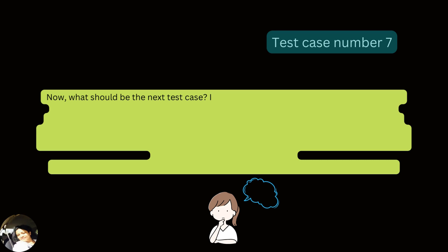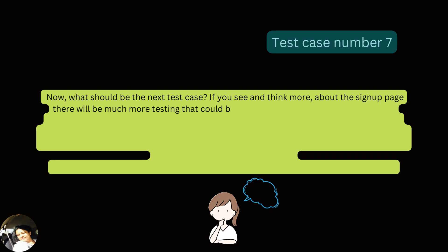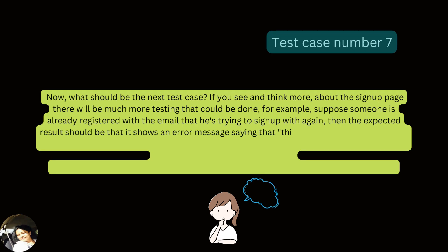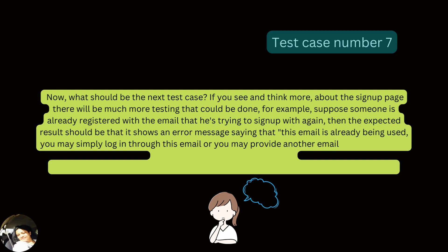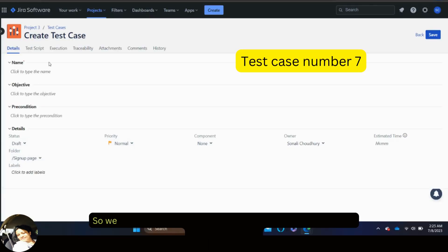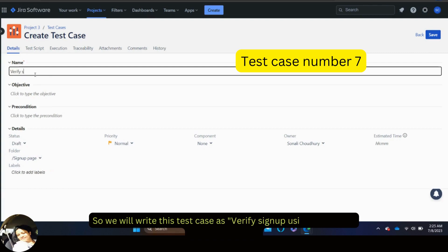Thinking further about the signup page — suppose someone is already registered with the email they are trying to use again. The expected result should be an error message saying this email is already in use, and prompting them to login or provide another email. We write this test case as 'Verify sign up using an already registered email.'